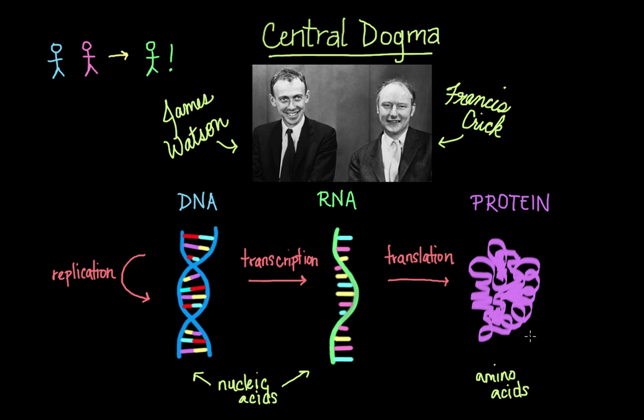Now, since DNA, RNA, and protein are linear polymers, this means that each individual unit or monomer is only attached to, at most, two other units. So say we have a monomer, which is just one unit — they are connected in a series like this, which makes it a linear polymer. And this is the same for DNA, if each of these is a deoxyribonucleic acid; for RNA, if it's a ribonucleic acid; or a protein, which are just amino acids all connected in a linear polymer.